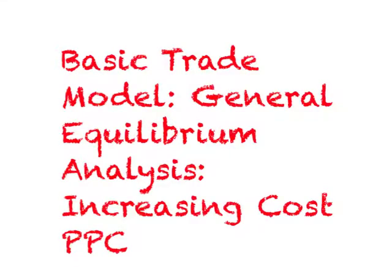Let us continue our discussion of general equilibrium analysis of the basic trade model. In the previous lecture, we looked at constant cost PPC, and now we look at increasing cost PPC in the case of two goods.